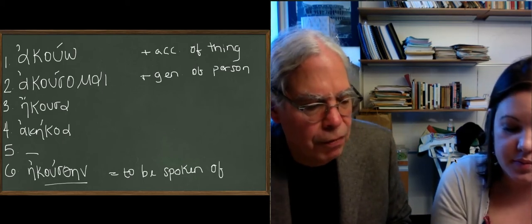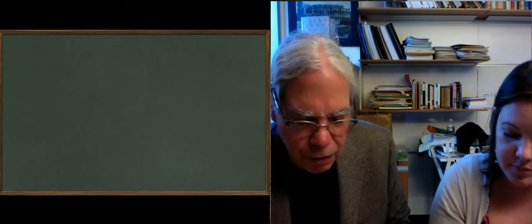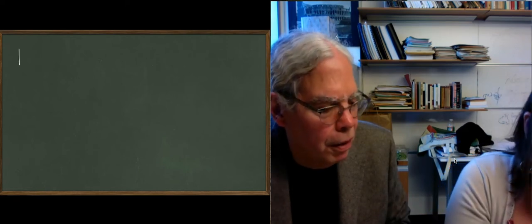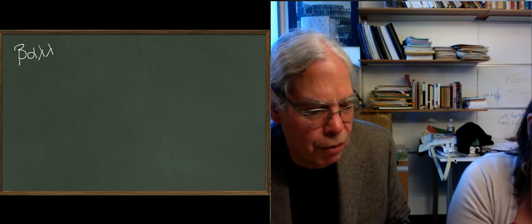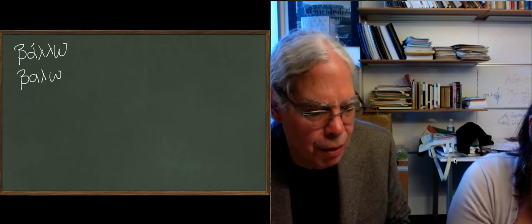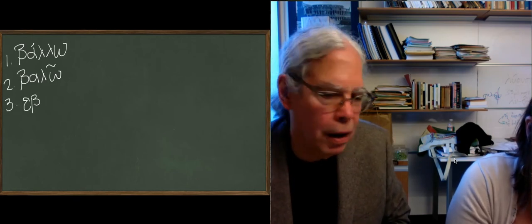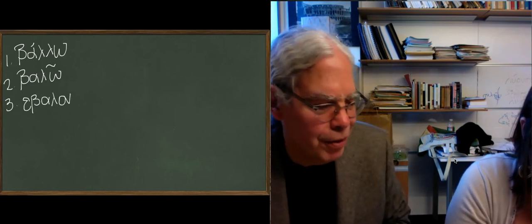This lesson finally gives us some other verbs that have second aorists. And it has three of them. The verb balu, which is an interesting verb in itself, with two lambdas in the present system, but only one everywhere else. We've seen this forever with the verb angelo.